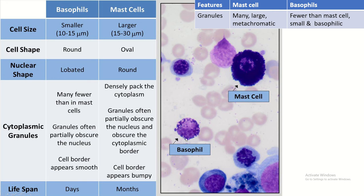The cell boundary is smooth in the case of basophils, but in the case of mast cells the cell boundary is not very clear — it is irregular due to cytoplasmic projections. The lifespan is days for basophils, and the lifespan of the mast cell is weeks to months.